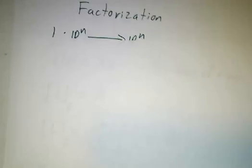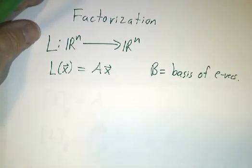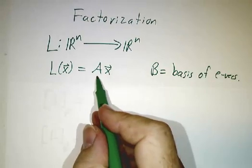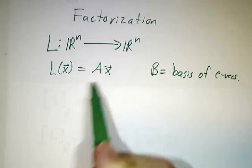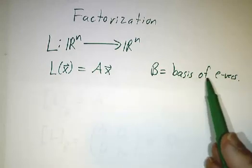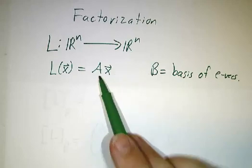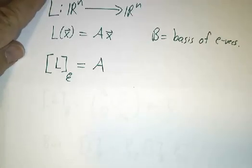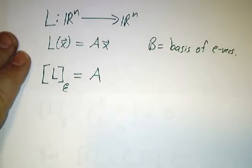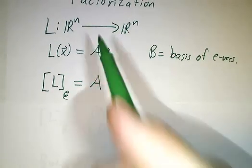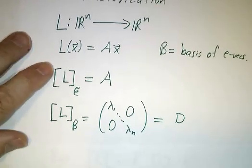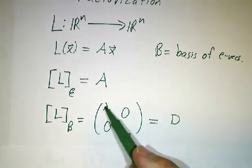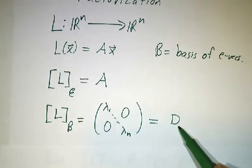Now there's another way of looking at this, which is in terms of factorization. So I said we'd get back to matrices, and here we are. So let's suppose that we've got a matrix A, or if you prefer you can think of it as linear transformation, that is, multiply by that matrix. And we've got a basis of R^n consisting of eigenvectors of A. Then if you write the matrix of L in the standard basis, that's just A. And we just said that if you write the matrix of L in the B basis, where B is the basis of eigenvectors, then you get a diagonal matrix. And I'm gonna call this diagonal matrix capital D for diagonal.